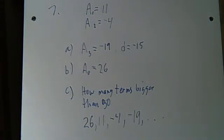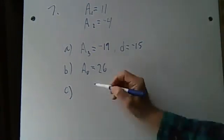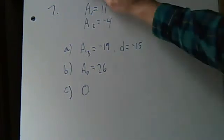It doesn't actually tell us actually what the total length of this particular sequence was. But we can be rest assured that there aren't any terms bigger than 30 because the first one is only 26 and they just get smaller and smaller. So the answer to this is zero. There aren't any terms bigger than 30. Okay. That's number 7.